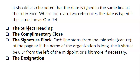Following that, we get to the complementary close, which should be centered, followed by the signature block. Each line for the signature block starts from the midpoint of the page. Sometimes we have the name of the organization coming immediately after the complementary close. If the name of the organization is long, then it should be 0.5 inches from the left of the midpoint, or you can go over a bit more if necessary. The designation also starts from the center of the page.